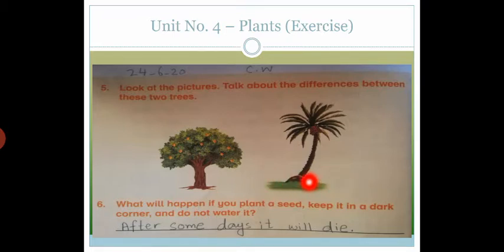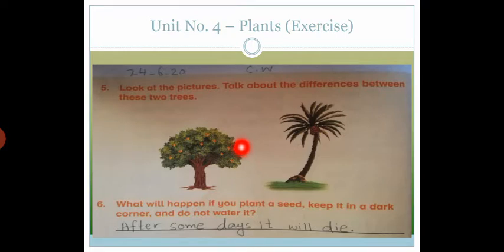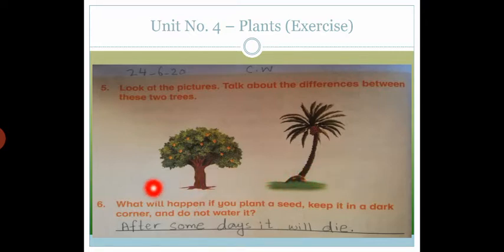So what will happen if you plant from there? We know a plant needs soil, sunlight, air and water to grow. In the previous session we asked this question. The plant needs soil, sunlight, air and water to grow. So if we plant a seed in a dark corner without water, after some days it will die. It will die because it will not get proper sunlight and it will not get water. So the plant will die.